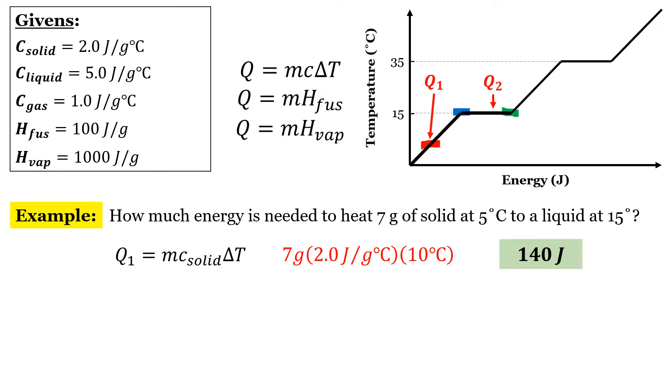To solve the second part, we're going to need to use the heat of fusion. Again, the mass is 7 grams. The heat of fusion is 100 joules over grams. 7 times 100 is 700. So we have these two segments. We know the energy required to complete the first part. We know the energy required to complete the second part. All we're going to do is add them together. So 140 plus 700 is 840 joules.